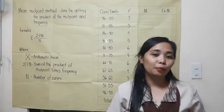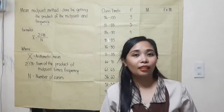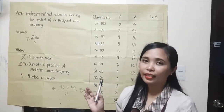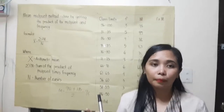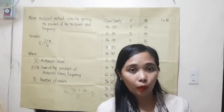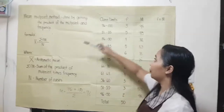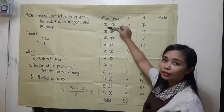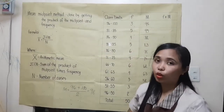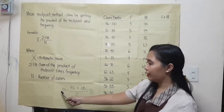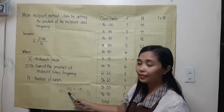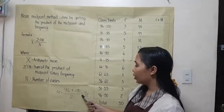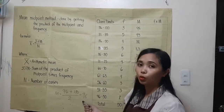We will find the midpoint and mean of this group data. To get the midpoint, we need to add the lower class limit and the upper class limit and divide by 2. So, for example: midpoint equals 96 plus 100 divided by 2, which equals 98.